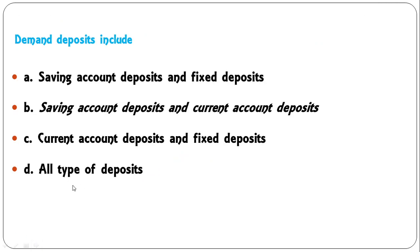Demand deposits include — saving account deposit, fixed deposit, saving account deposit and current account deposit, or current account deposit and fixed deposit? Demand deposit is that kind of deposit which is withdrawn on demand. So B — saving account and current account deposit — is the correct answer here.